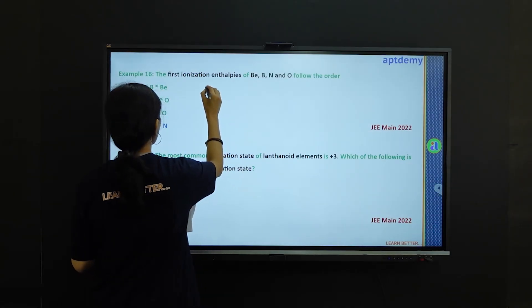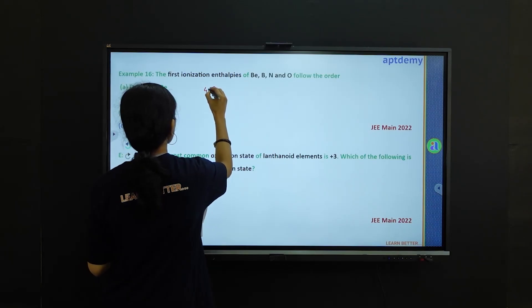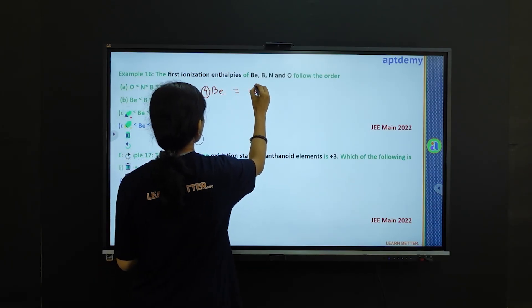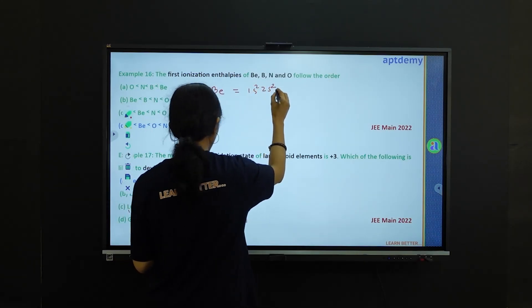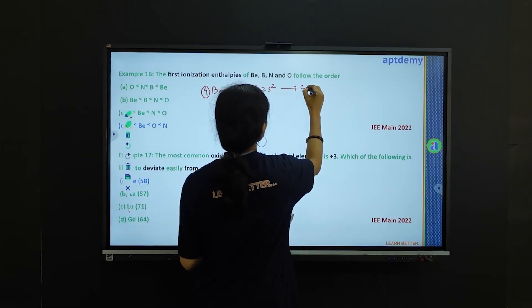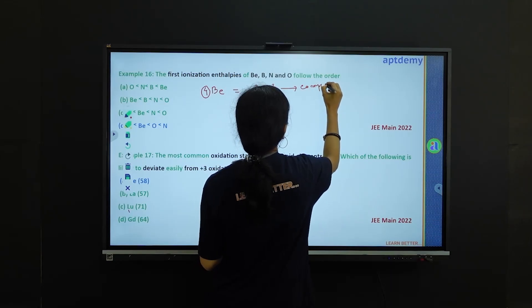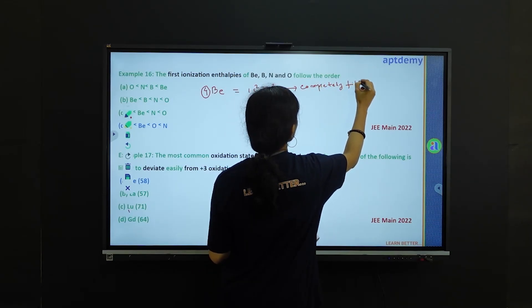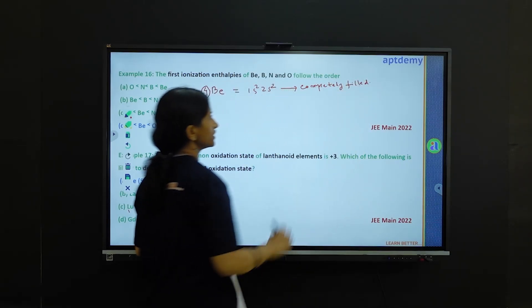Let's write down their electronic configuration. Beryllium is 4, the atomic number, so 1s2 2s2, which is completely filled, and completely filled electronic configuration would represent a stable configuration.